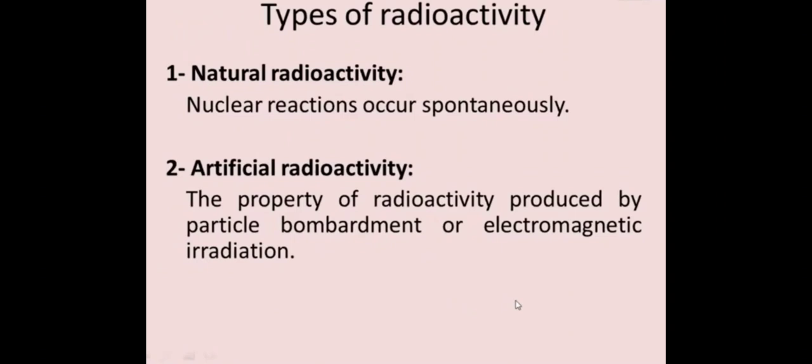Next, we discuss the different types of radioactivity. The first is natural radioactivity, where nuclear reactions occur spontaneously. The second is artificial radioactivity, which is produced by artificial methods — specifically, the property of radioactivity produced by particle bombardment or electromagnetic irradiation. It can be brought about by bombarding a suitable element with slow neutrons, which disturb the nucleus making it unstable, causing it to disintegrate and emit rays.